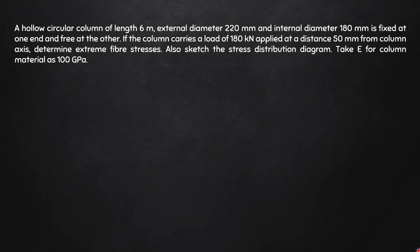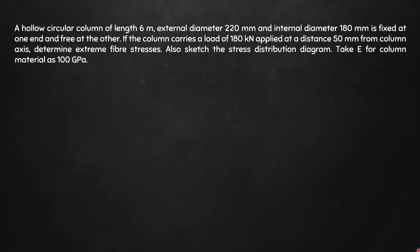Now let's start with today's problem: a hollow circular column of length 6 meters, external diameter 220 mm and internal diameter 180 mm, is fixed at one end and free at the other. The column carries a load of 180 kN applied at a distance of 50 mm from the column axis. Determine the extreme fibre stresses and sketch the stress distribution diagram. Take E for the column material as 100 GPa. This is a very common type of problem from Mumbai University, usually worth 8 to 10 marks.